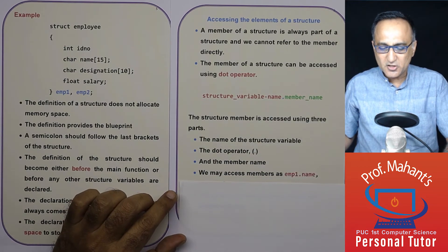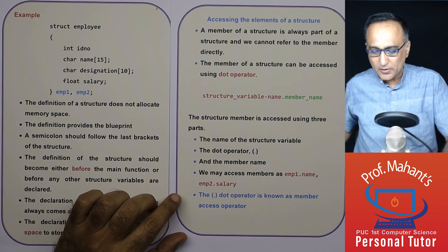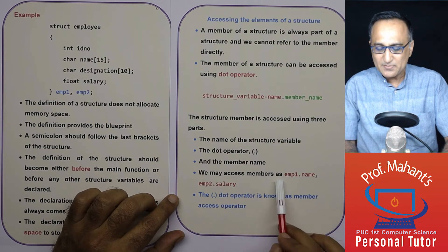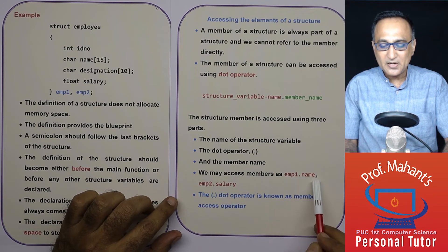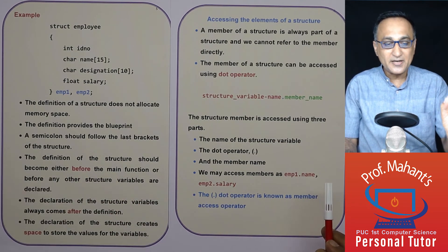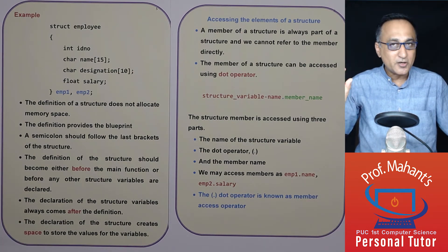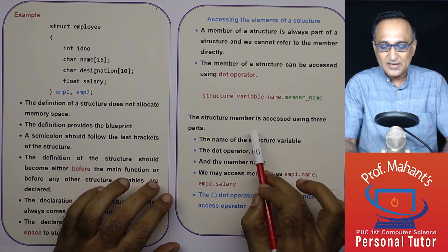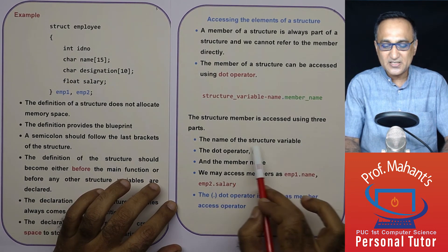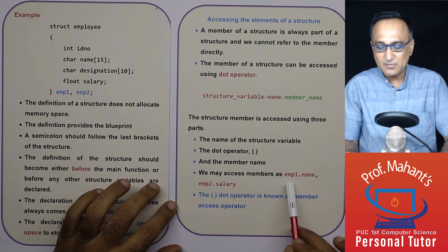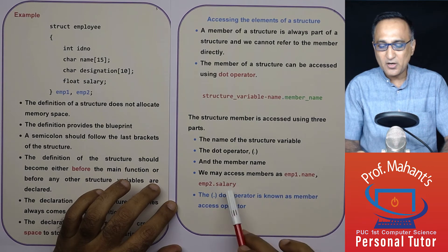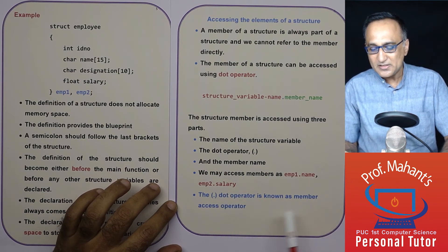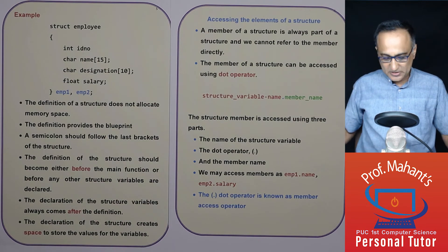The general syntax is: structure variable name, then dot, then member name. The structure variable name is EMP1, the dot operator is as-is, and the member name is salary, name, ID number, or any of these. We may access members as EMP1.name or EMP2.salary. EMP1.name is completely different from EMP2.name — they are two different memory locations and two different variables. The dot operator is known as the member access operator.